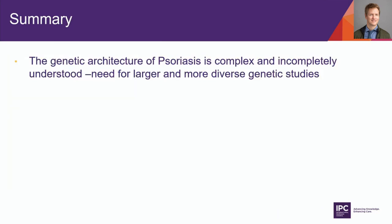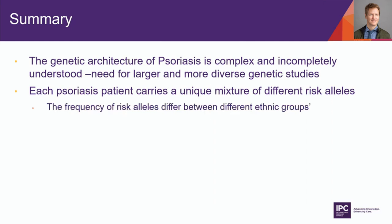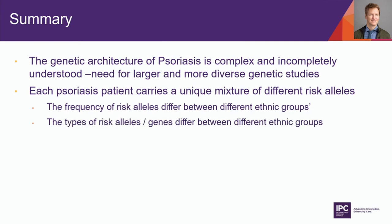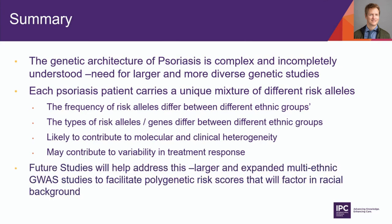In summary: the genetic architecture of psoriasis is complex and incompletely understood, and there is a need for larger, more diverse genetic studies. Each patient carries a unique mixture of risk alleles, and the frequency, type, and combination of risk alleles differ between ethnic groups. These differences likely contribute to molecular and clinical heterogeneity of the disease and may contribute to variability in treatment response. Future multi-ethnic GWAS studies are needed to facilitate polygenic risk scoring that factors in racial background to predict risk and guide treatment.